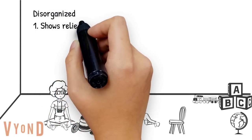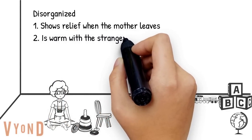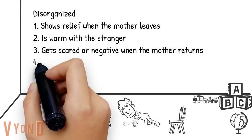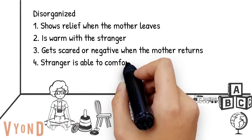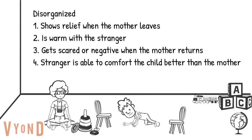Disorganized attachment is commonly seen when there is some sort of child abuse occurring. The child is actually relieved when the mother leaves, because the mother may be abusive, and is warm and happy to see the stranger — even happier to see the stranger than the mother. Psychologists in some cases will look for disorganized attachment patterns among children to help identify if there is any child abuse going on.